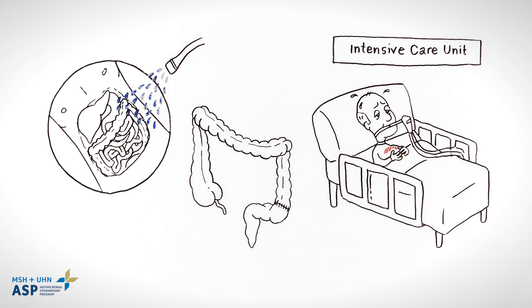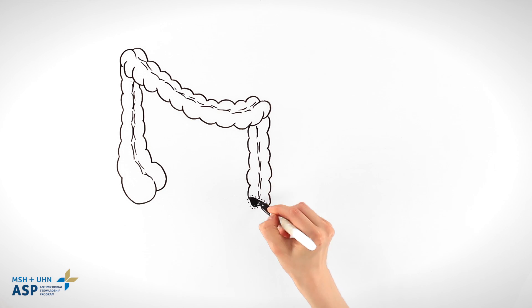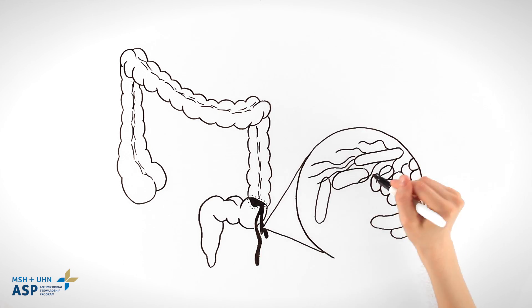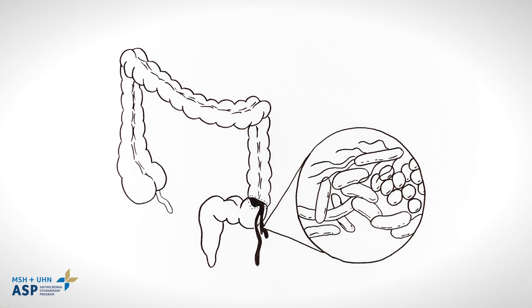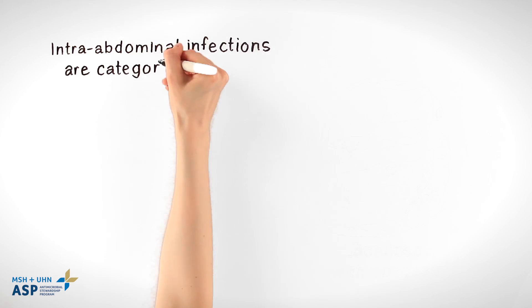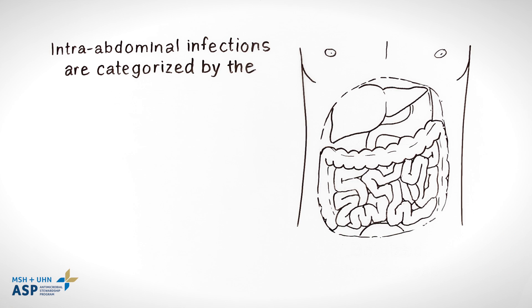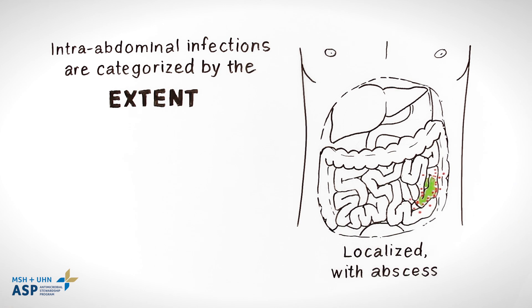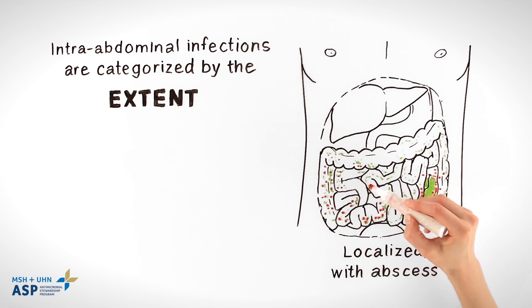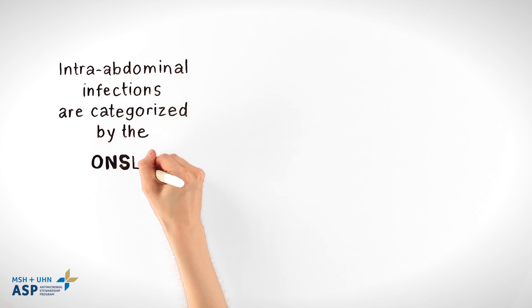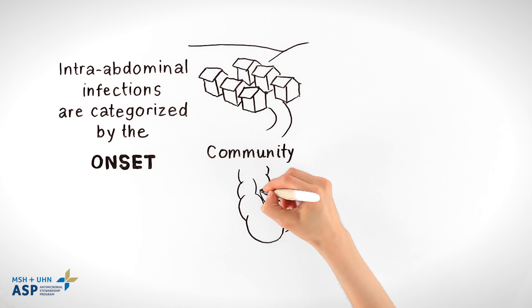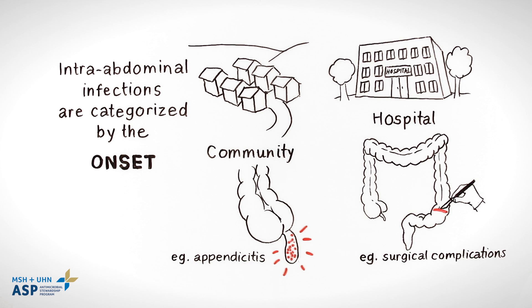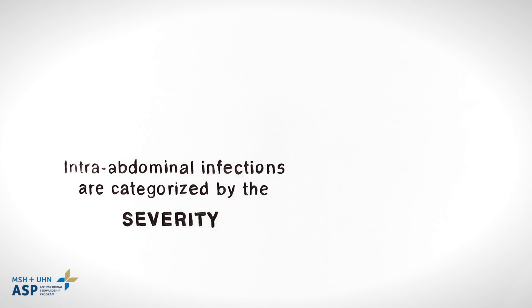He is now in the ICU. CM has secondary peritonitis. Secondary peritonitis is defined as spillage of normal gut flora into the peritoneum. Intra-abdominal infections are categorized by the extent — localized or extending beyond the initial site of infection — onset, community or hospital, and severity of infection.